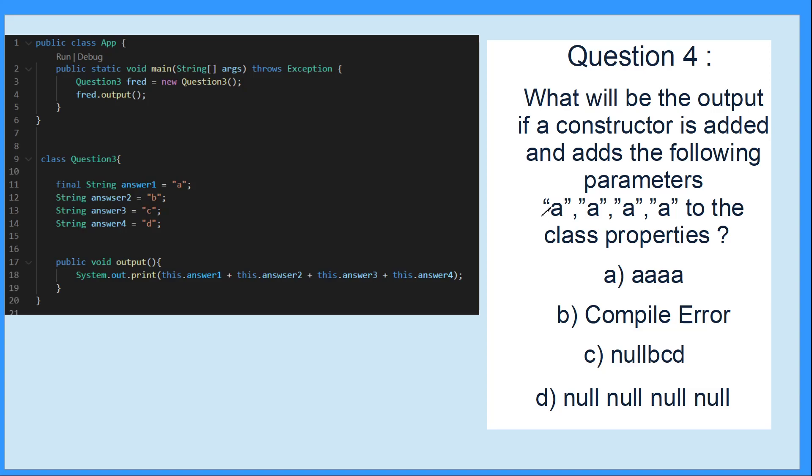This is looking at another constructor question. If you added a constructor and added the following parameters to this new object - if you added aaa to this - what will happen when you print it out? The answer is a compile error. The reason is because the data type in the first answer in code 11 is final, which means this cannot be changed once it is set. Even though the value is a when you insert it, the computer will make a compile error because you're trying to change that value that cannot be altered.